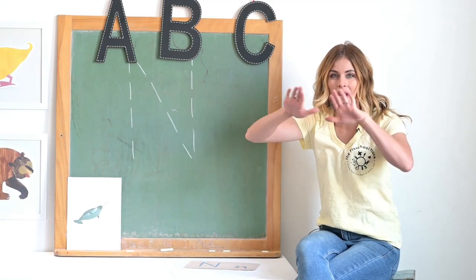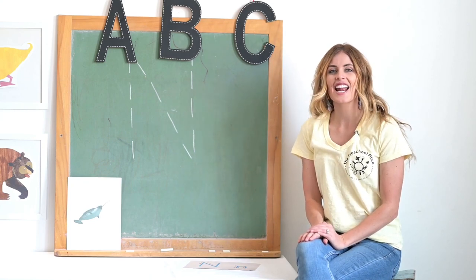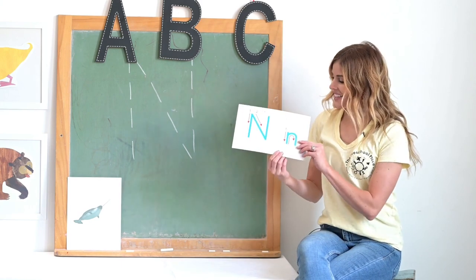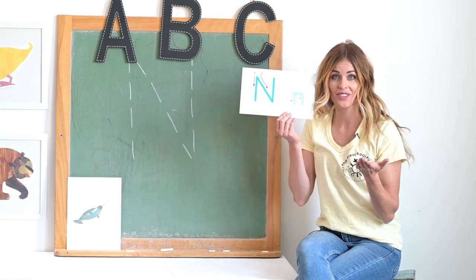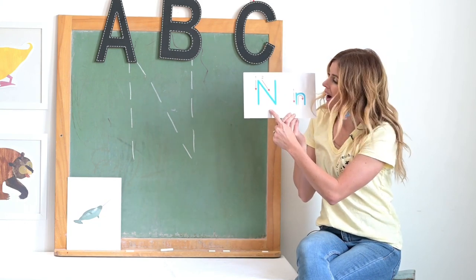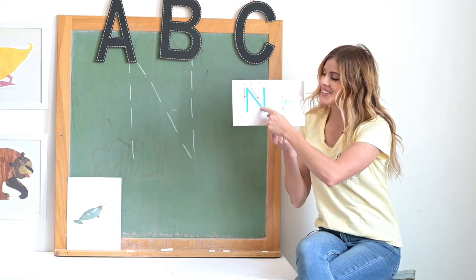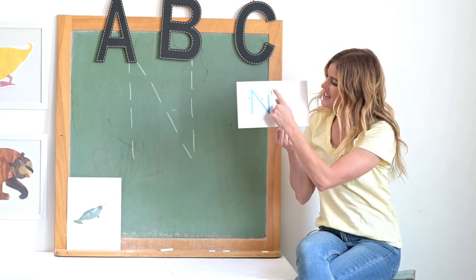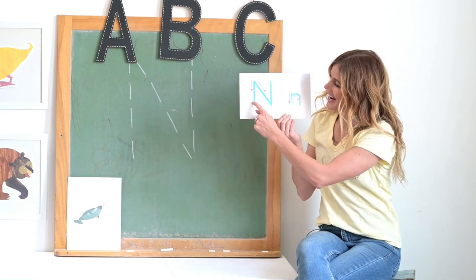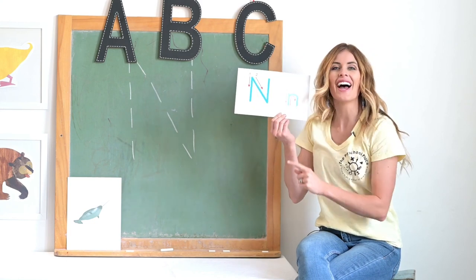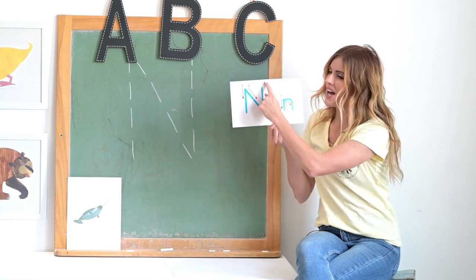Wasn't that fun going swimming and finding things that start with the letter N? N says N. Let's learn how to write our big N. What letter features does big N have? I see a soldier straight line, a slant, and another soldier straight line. This is how we write the letter N: down, slant, down, up N. Can you say it with me? Down, slant, down, up N.